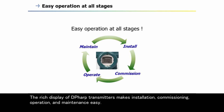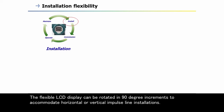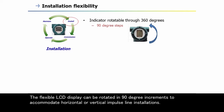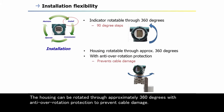The rich display of DPharp transmitters makes installation, commissioning, operation, and maintenance easy. The flexible LCD display can be rotated in 90-degree increments to accommodate horizontal or vertical impulse line installations. The housing can be rotated through approximately 360 degrees with anti-over-rotation protection to prevent cable damage.